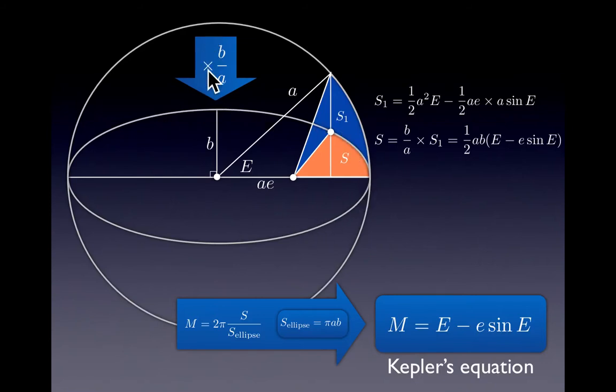It's a circle with a radius a, which is the semi-major axis of the ellipse, which is squashed by a factor b over a, where b is the semi-minor axis of the ellipse.